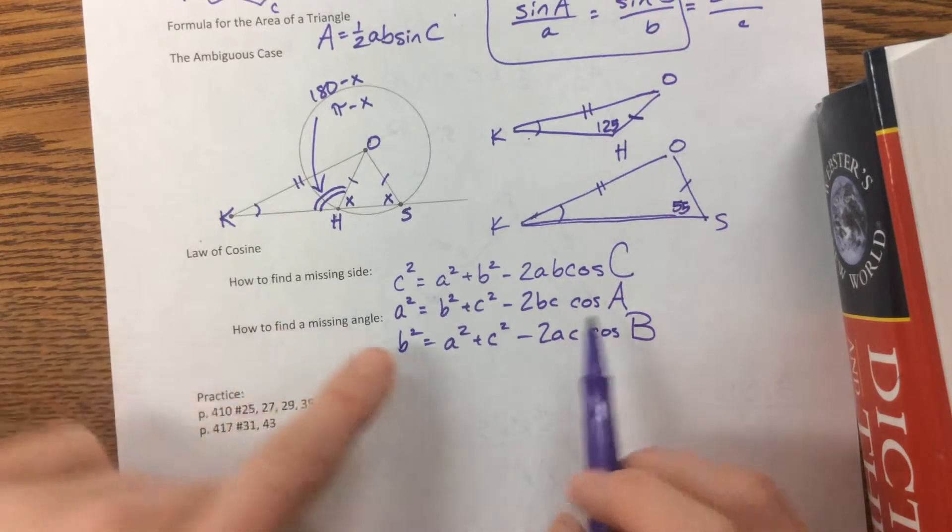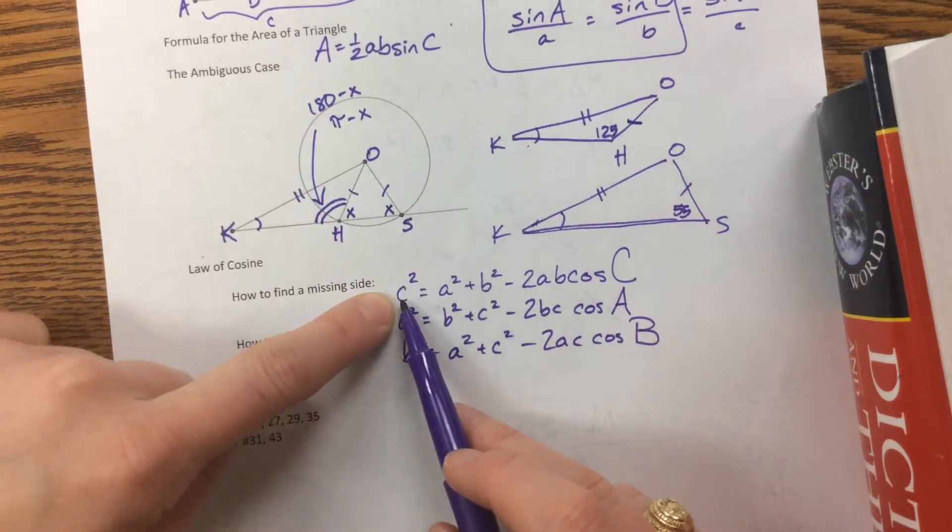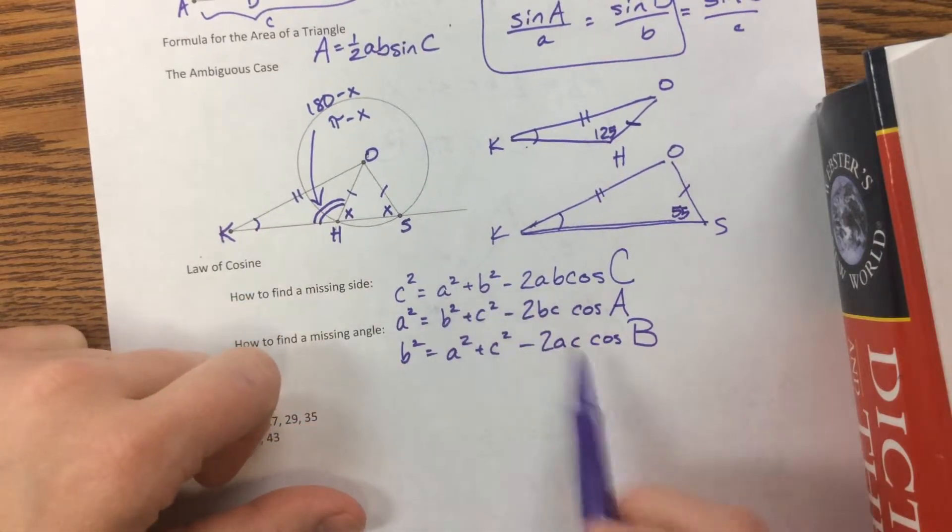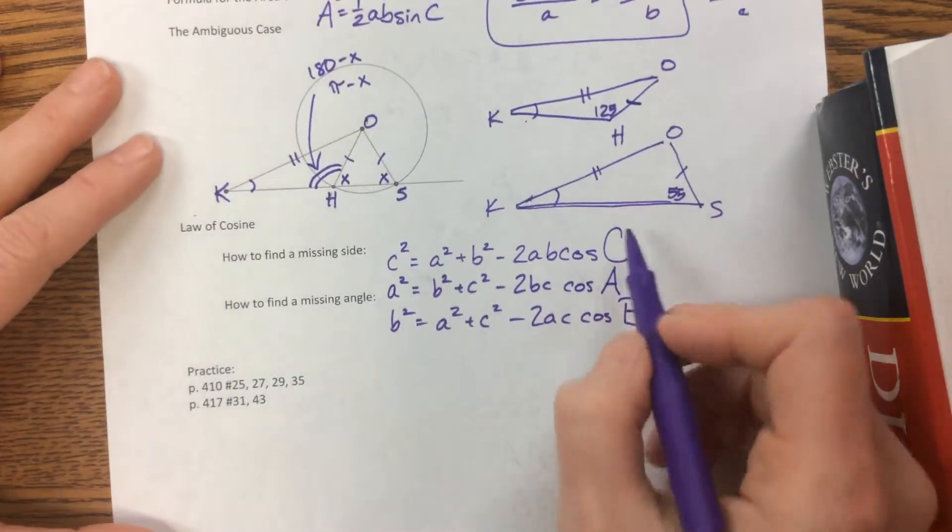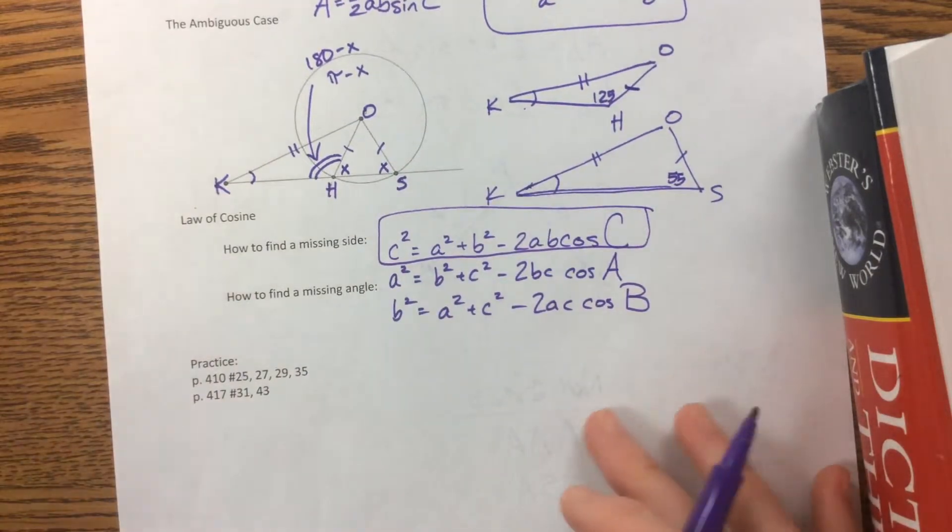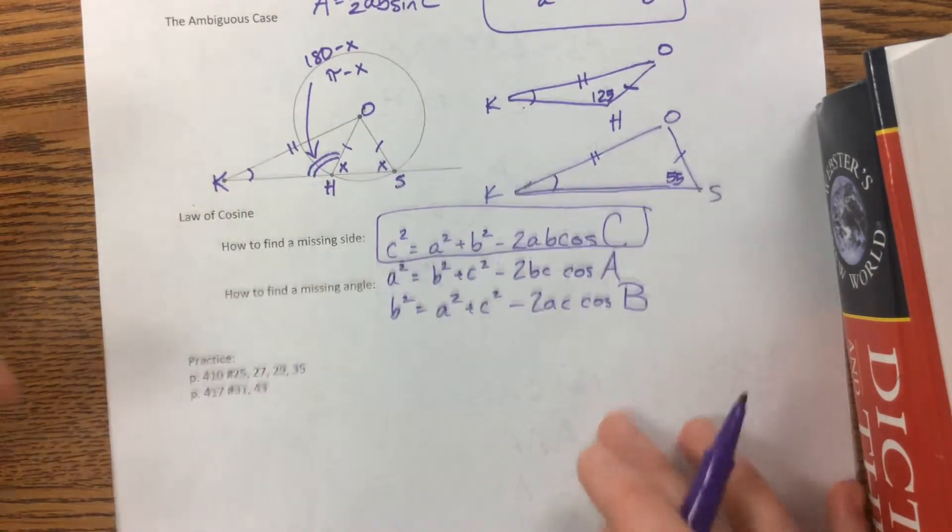Basically, what has to happen is that this letter, this little letter has to match the big letter that's the angle. And then the other two show up in the other places. This is the one that I have memorized and I can get to the others if I need it. Or I can just name my triangle however I want.